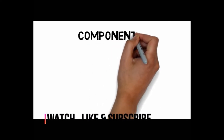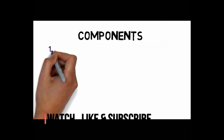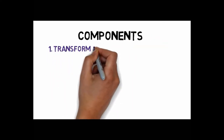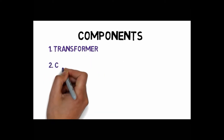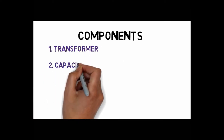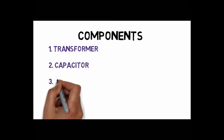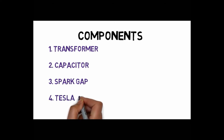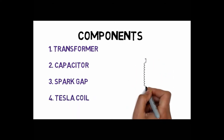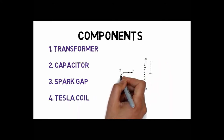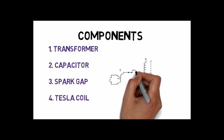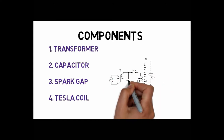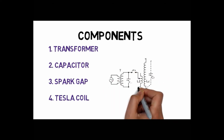The components required to make a Tesla coil are: first, a high voltage supply transformer; second, a capacitor; third, a spark gap which acts as a switch; and fourth, the Tesla coil itself, which is a resonant transformer, along with a low voltage supply transformer to complete the circuit.